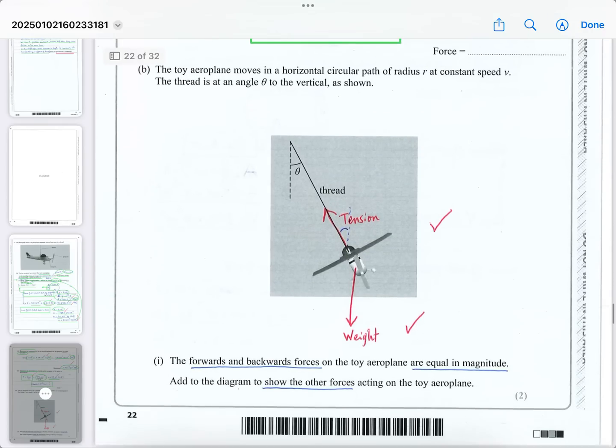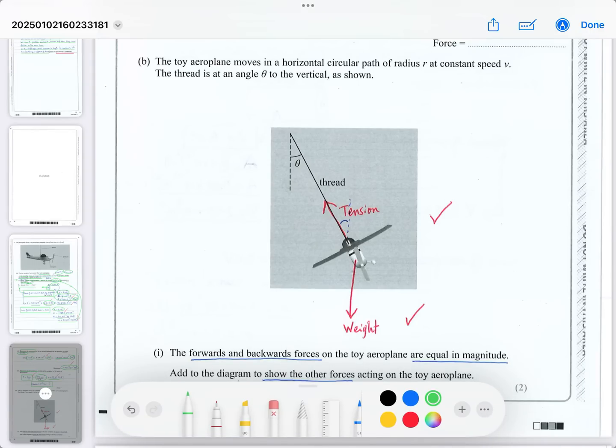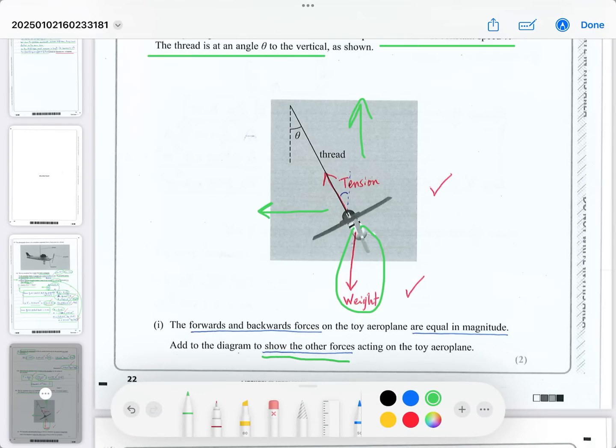Part B involves a force diagram. The toy airplane moves in a horizontal circle of radius r at constant speed v, so we have circular motion with centripetal acceleration mv²/r. The thread is at angle θ to the vertical, allowing you to work out the centripetal force towards the center, which is a component of the tension.